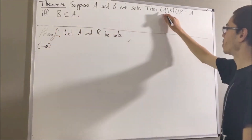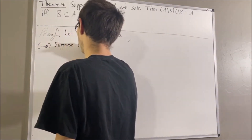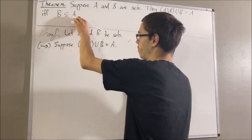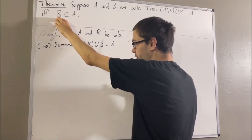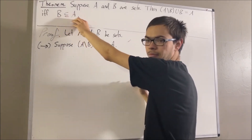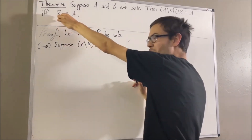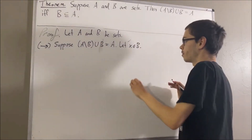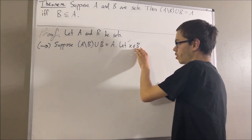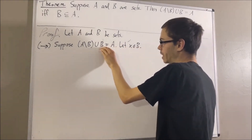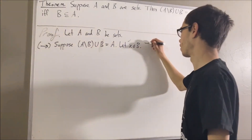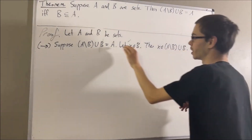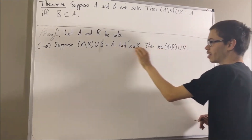To do so, suppose the union of A set minus B and B is equal to A. Our goal is to deduce that B is a subset of A, which means we're trying to prove that everything in B is also in A. To do that, give me an arbitrary element of B — I'll call it X. Now, since X is an element of B, we know that X is an element of B or A set minus B.